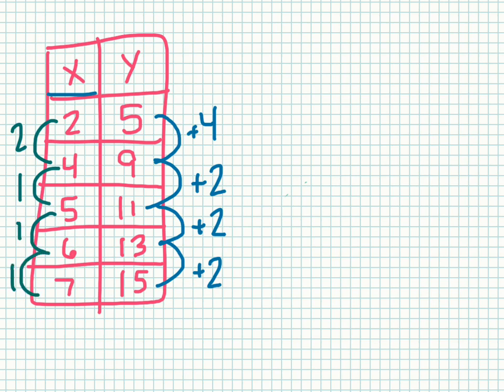Now if I look at my rate of change for each part on the table, I need to make sure I have the same rate of change everywhere. Because these all look like different numbers. So for the first two numbers, my rate of change, my change in y over change in x is 4 over 2, and that reduces to 2 over 1.